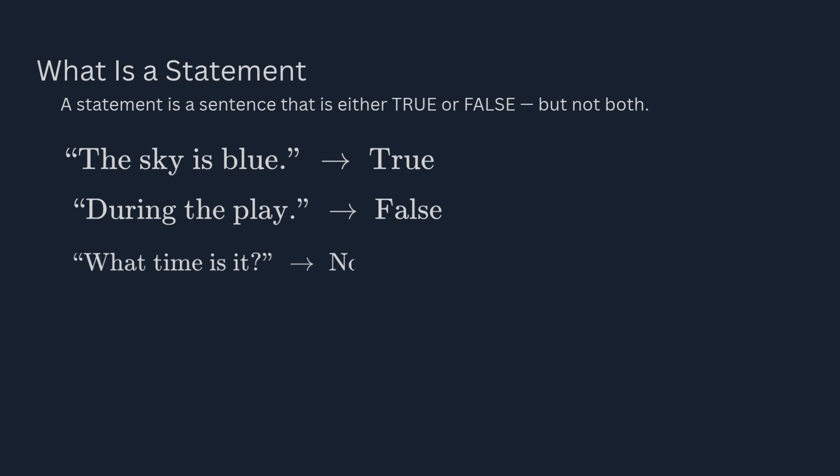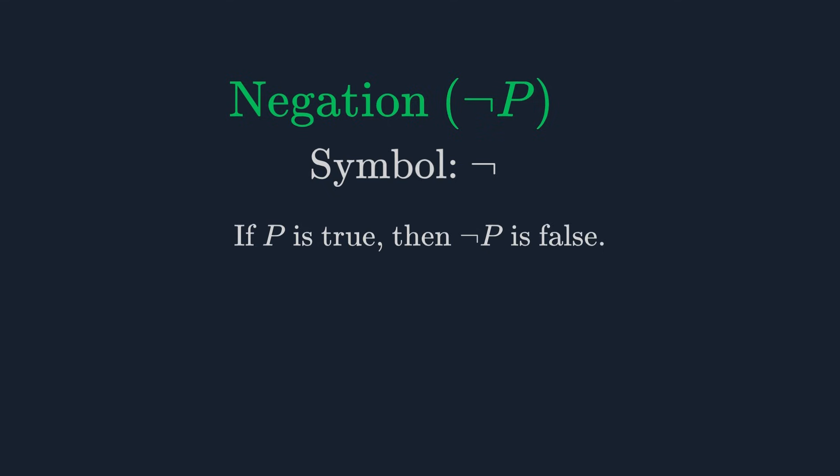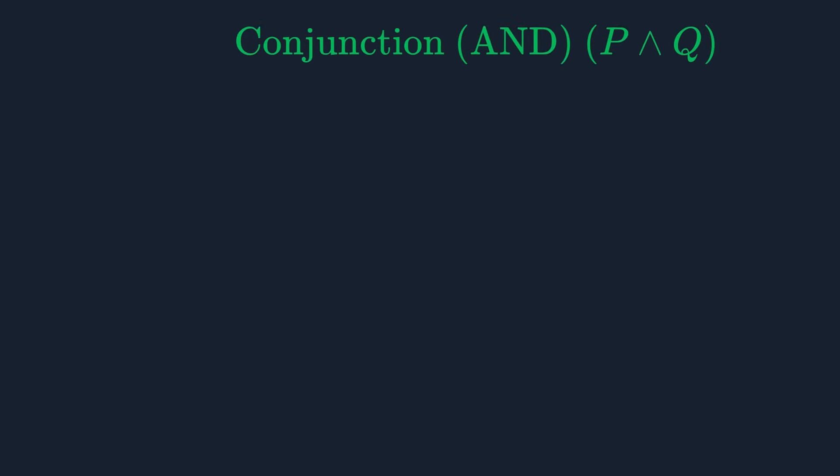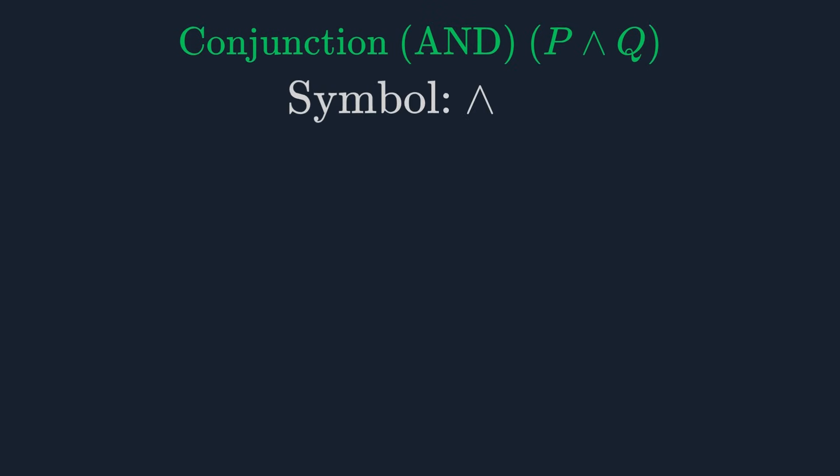But "what time is it" is not a statement because it's a question, not a declaration. We can combine simple statements into more complex ones using logical connectives. Let's look at the most common ones. First, we have negation, represented by this symbol. If P is a statement, NOT P is its opposite. If P is true, NOT P is false, and vice versa.